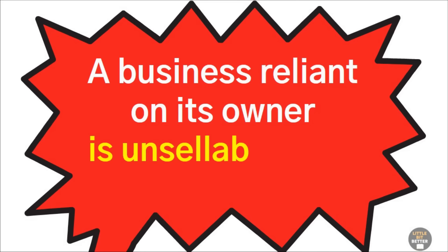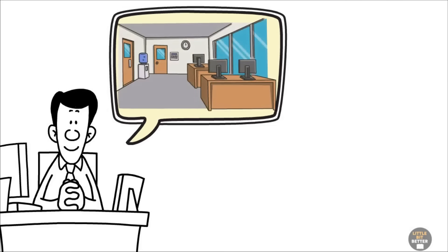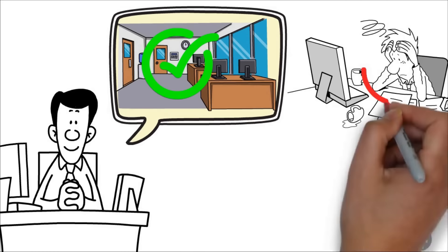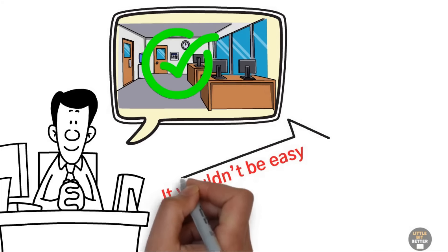A business reliant on its owner is unsellable even if it's profitable. But Ted added that if Alex wanted to create a business that could run and thrive without him, he'd need to make some changes. It wouldn't be easy, but Ted could help him.